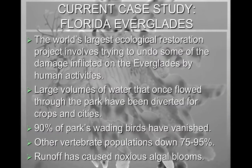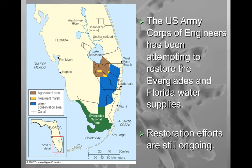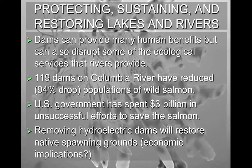An example worth discussing is the Florida Everglades — the world's largest ecological restoration project, still in process. The attempt is to undo the damage inflicted by humans: originally, large volumes of water flowed through the park, but they were diverted for crops and cities, leading to the destruction of approximately 90% of the park's wading birds, with other vertebrate populations down by 75 to 95%. There was also widespread eutrophication and algal blooms. The US Army Corps of Engineers was called in to restore the Everglades and water supplies to normal conditions, and although restoration efforts are still ongoing, it's a very promising outlook.